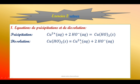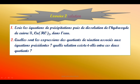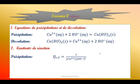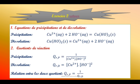On sait que OH porte une charge moins. Multiplié par deux, ça nous donne deux charges négatives. Donc le cuivre doit porter deux charges positives. Quelles sont les expressions des quotients de réaction associées aux équations précédentes ? Quelle relation existe-t-il entre ces deux quotients ? Les quotients de précipitation et de dissolution sont liés : l'un est l'inverse de l'autre.